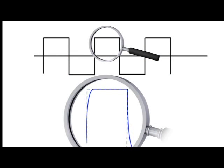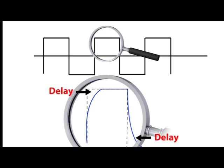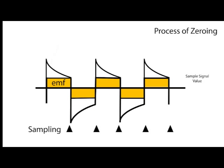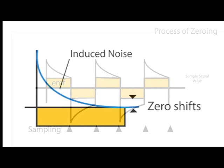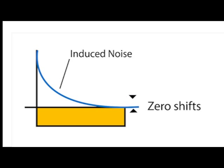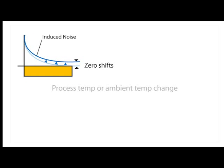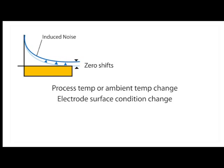These induced magnetic fields delay changing of the magnetic field generated by the coil drive. Although zeroing off any changes could initially bring the signal back to a repeatable value, the shape of the signal waveform of induced noise may change with time. This could be caused by a variety of influences, such as process or ambient temperature change, electrode surface condition change, or adhesion in a flow tube.